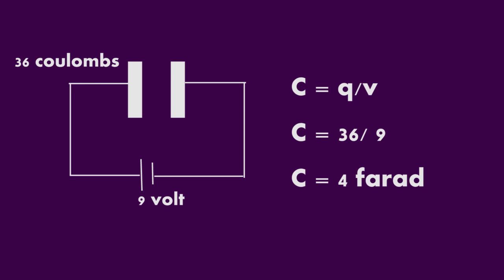Now according to the formula of the capacitance, C is equal to 36 upon 9. 36 will get divided by 9 and the capacitance will be equal to 4 farad.